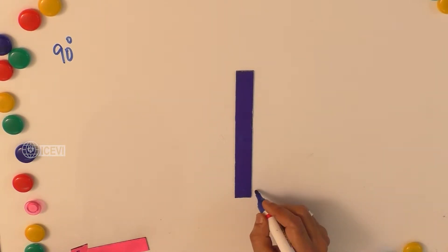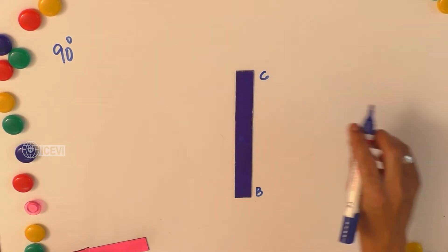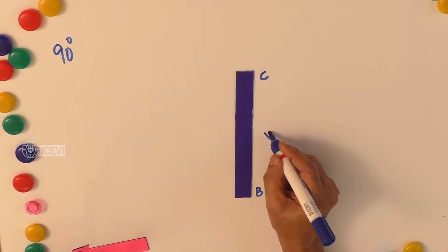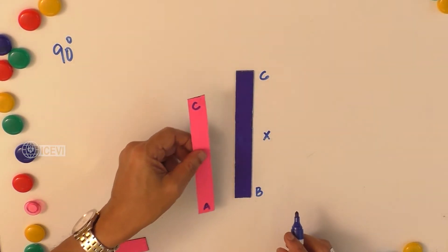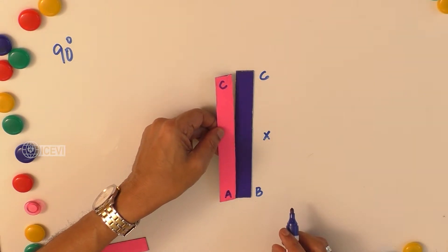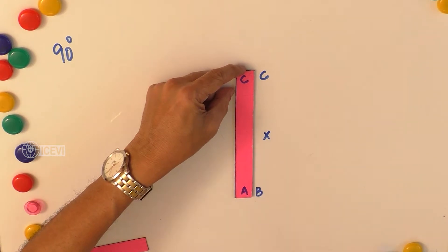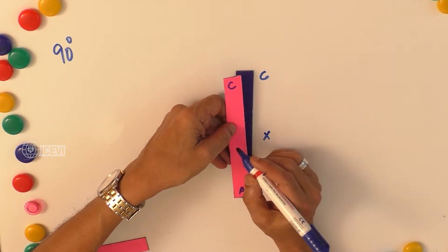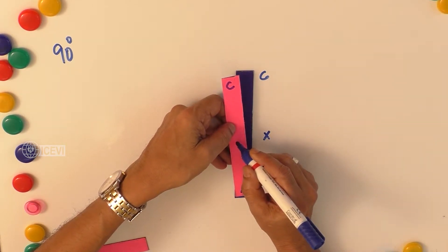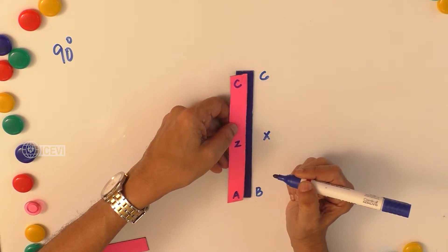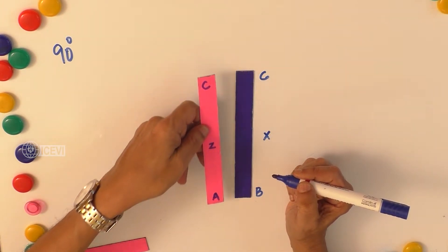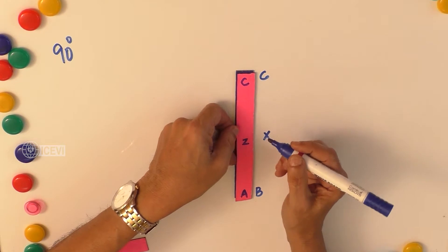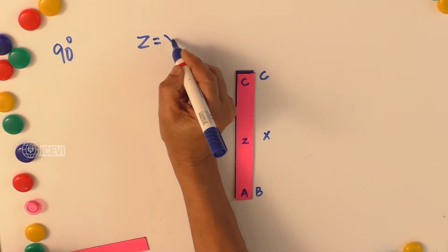I'm calling the length of BC as X. Now I'm taking another line AC which is the same length as BC, so I call the length of AC as Z. When AC and BC are identical, Z becomes X.